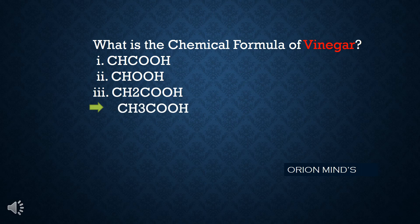What is the chemical formula of vinegar? The answer is CH3COOH.